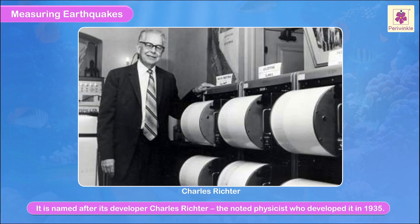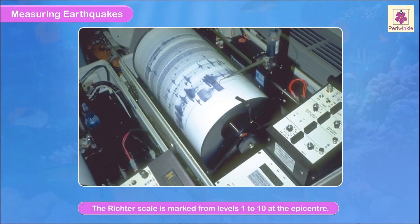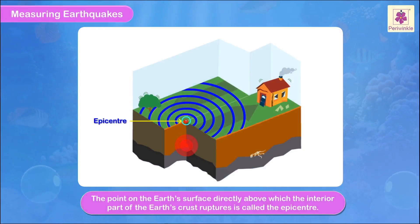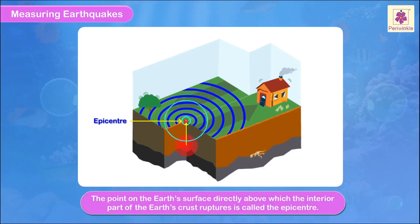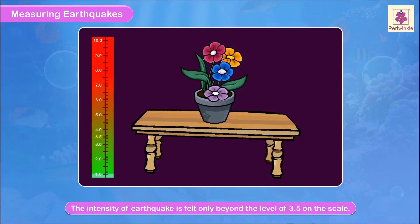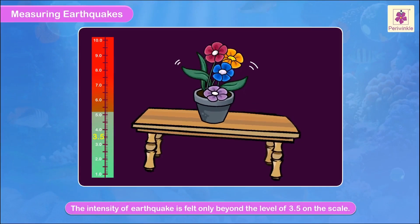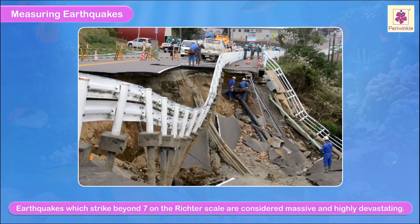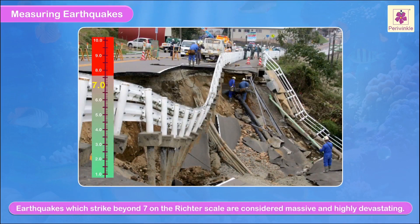The Richter scale is named after its developer Charles Richter, the noted physicist who developed it in 1935. The Richter scale is marked from levels one to ten. The epicenter is the point on the earth's surface directly above where the interior part of the earth's crust ruptures. The intensity of an earthquake is felt only beyond the level of 3.5 on the scale. Earthquakes which strike beyond seven on the Richter scale are considered massive and highly devastating.